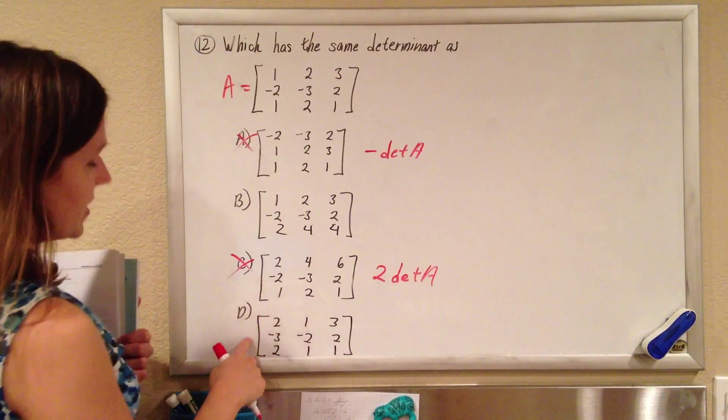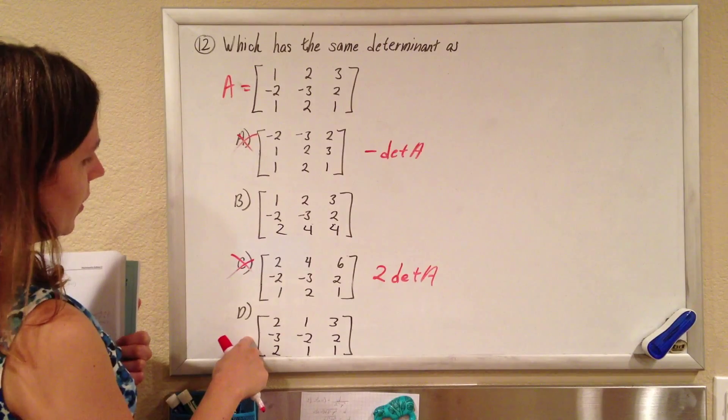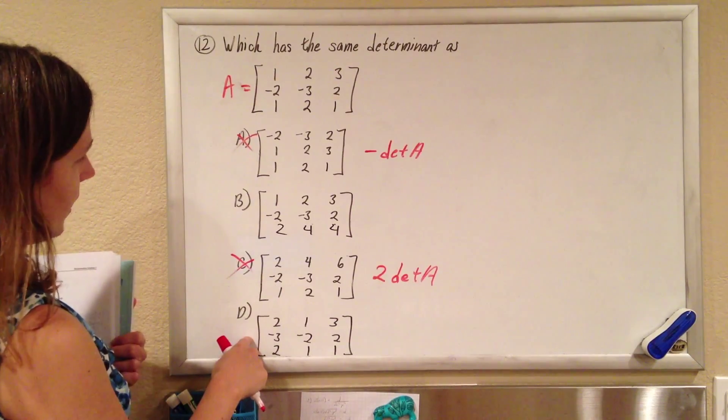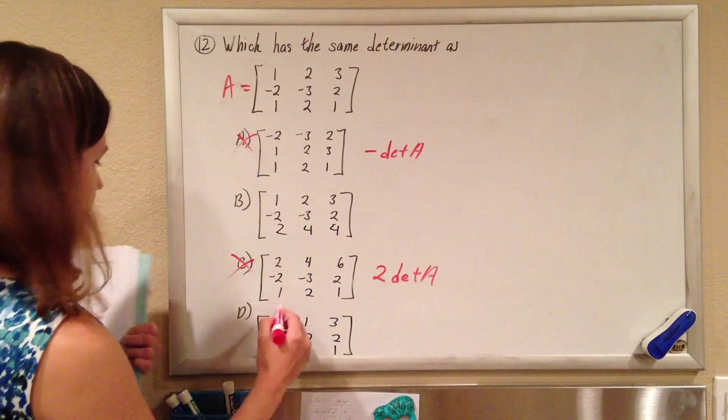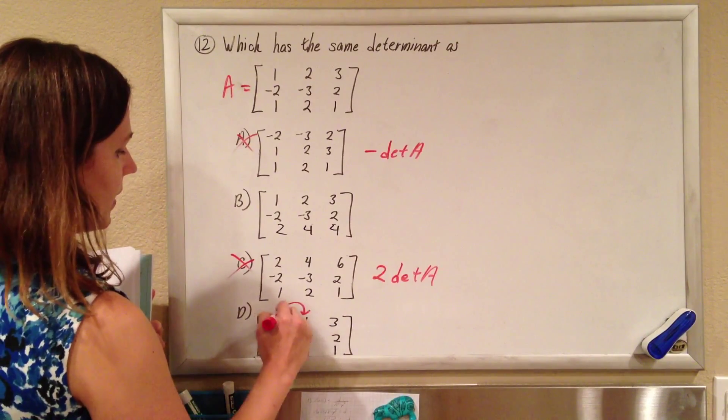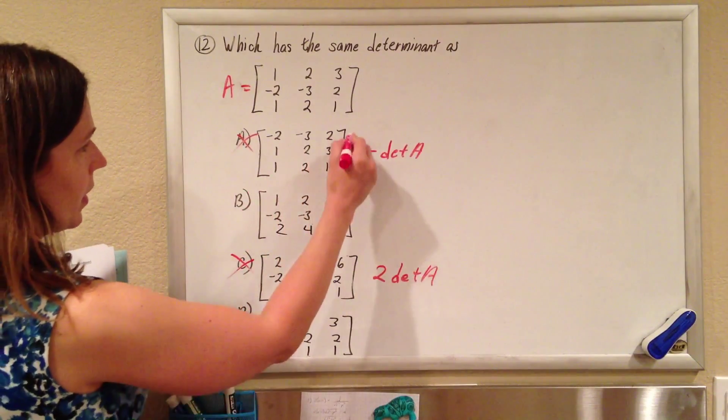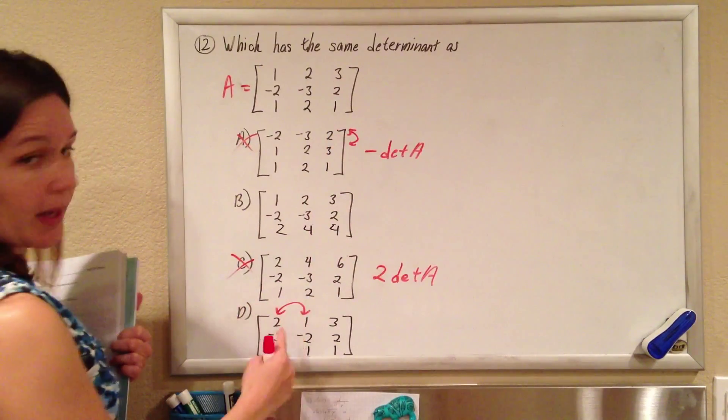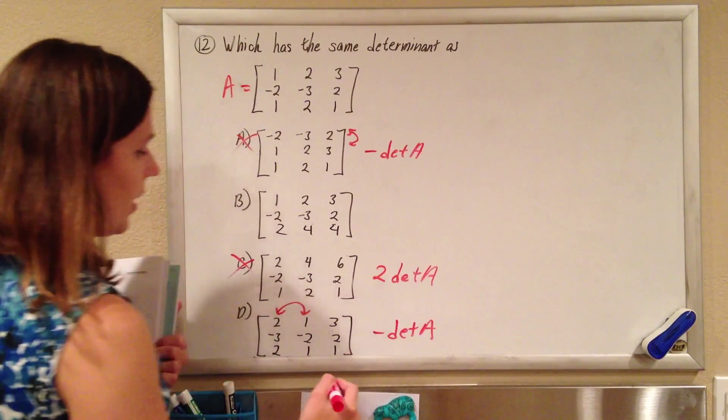And so we look at D, so D, what did they do here? They just interchanged these two rows, columns, right? So they kept this column the same, the third column the same, and they switched those two. So the same idea of switching rows, the same thing happens when you switch columns. This will be the negative determinant of matrix A.